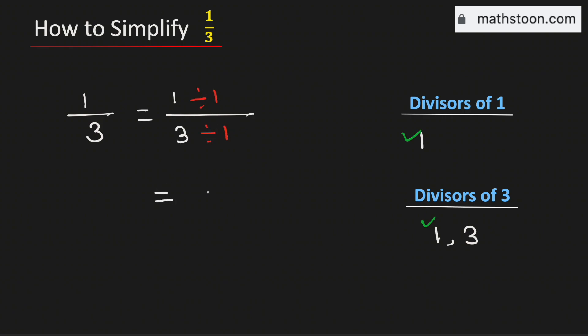If we divide it, we will get 1 over 3. So the fraction 1 over 3 simplified is equal to 1 over 3. It means the fraction 1 over 3 is already simplified and this is our final answer.